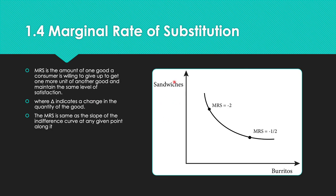For example, if Greg — the college student — wants to give up a sandwich for more burritos in a given week, that's the marginal rate of substitution in action. He's willing to substitute one chicken teriyaki Subway sandwich for a Chipotle burrito. The MRS is the same as the slope of the indifference curve at any given point along it.